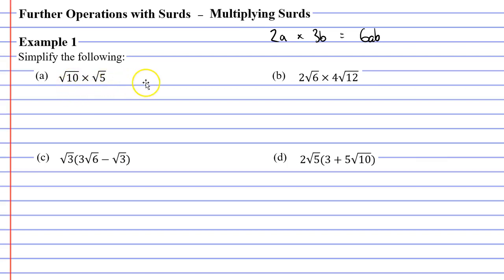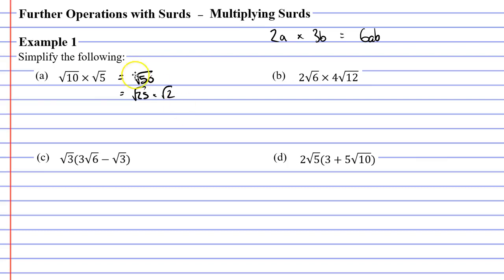10 times 5 is 50, so we're going to get the square root of 50. The example tells us to simplify, so after multiplying together our surds, we need to simplify this. I'm going to split the square root of 50 into the square root of 25 multiplied by the square root of 2.